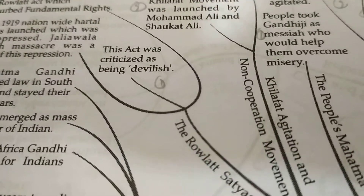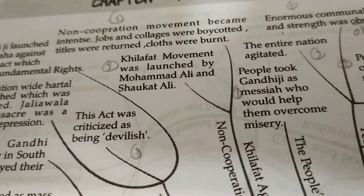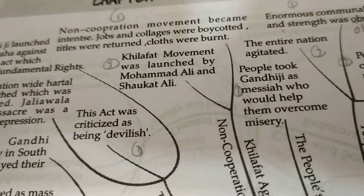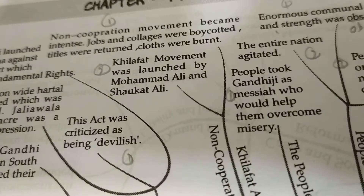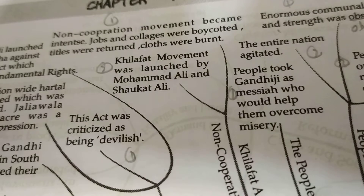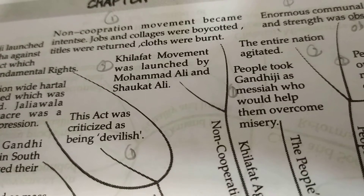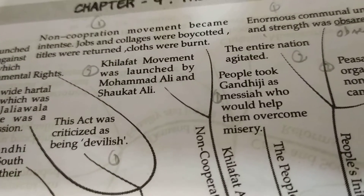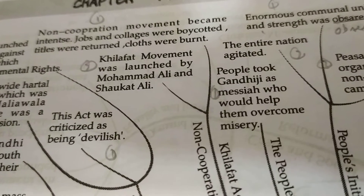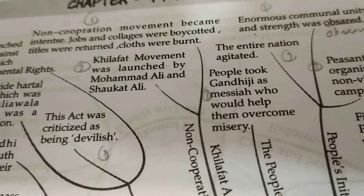Then, the Khilafat agitation and the Non-Cooperation Movement. The Non-Cooperation Movement became intense — jobs and colleges were boycotted. The Khilafat movement was launched by Muhammad Ali and Shaukat Ali against the discrimination done to the Khalifa of Turkey. Gandhiji supported them and said that both Hindus and Indian Muslims should fight together.